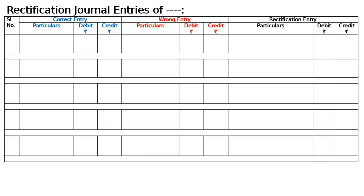The question is: pass journal entries to rectify the errors in the following cases. Case (a): a purchase of goods from David amounting to Rs. 150 has been wrongly passed through the sales book. The correct entry should be Purchase account debited to David.